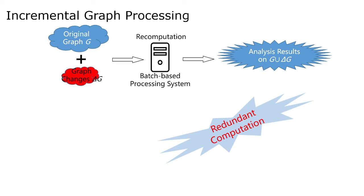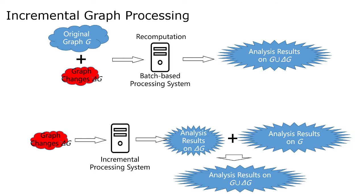When graphs are updated, the traditional graph processing approach is to re-perform the entire computation on the new graph. However, recomputation always results in a large amount of redundant computation, because there is considerable overlap between the batch computation on the original graph and the recomputation on the updated graph, especially given the large amount of iterative computation in most graph analysis algorithms. Incremental graph processing systems update the analysis results based on the input graph changes delta G and the analysis results on G, which helps eliminate redundant recomputation.